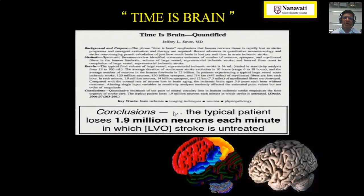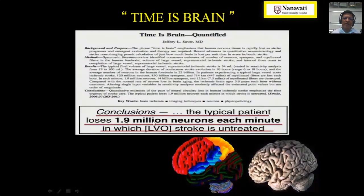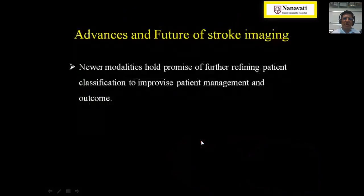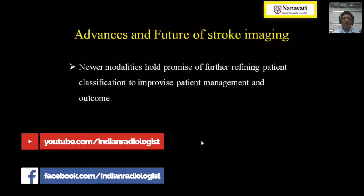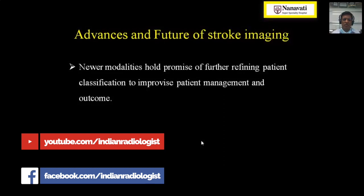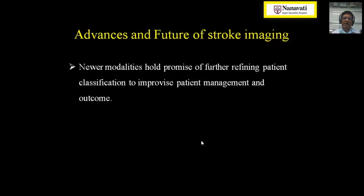Time is brain. In the typical patient with large vessel occlusion, almost 1.9 million neurons get damaged every minute treatment is delayed. The onus is on us to ensure we do not waste any time. Good collaboration and teamwork between the emergency department, neurologist, and radiologist is the way forward to minimize brain damage and give the earliest possible treatment to appropriate candidates.